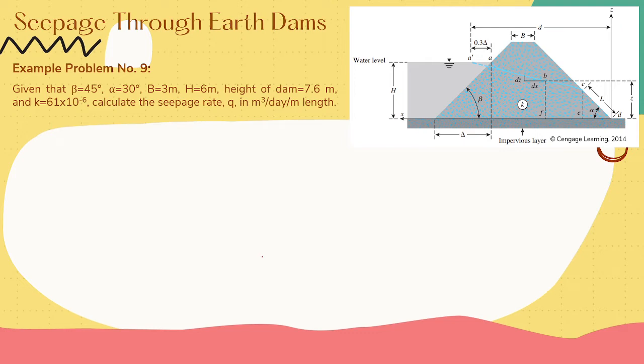For step 1, alpha is already given, that is 30 degrees. For step 2, delta and 0.3 delta. We can obtain delta by using tangent beta equals h, which is the opposite, all over the adjacent side, which is delta.